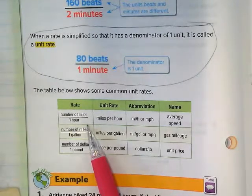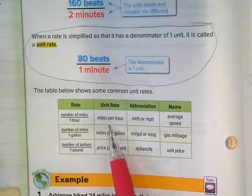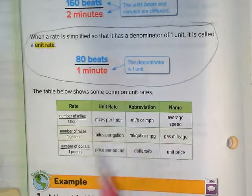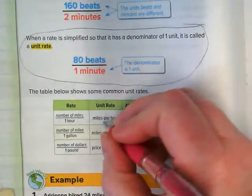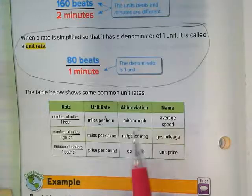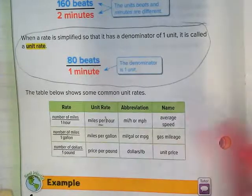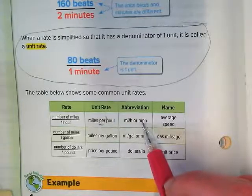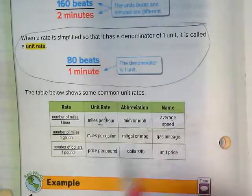Here's some common unit rates. Miles per hour - that's the first one I talked about. That per is always saying per one hour. And you can see it abbreviated as miles over hours or MPH, and that's going to talk about average speed that your vehicle is going.